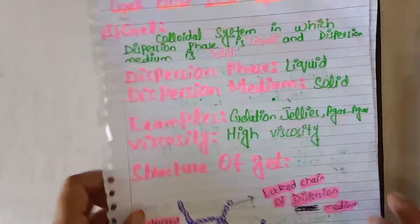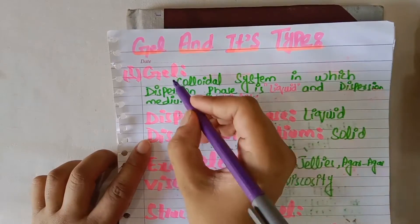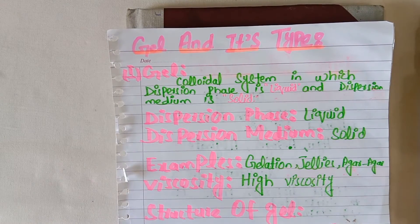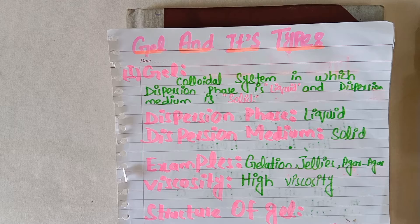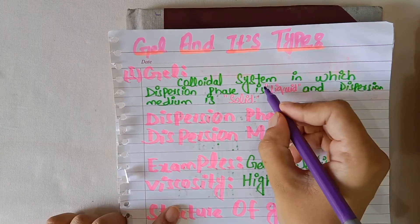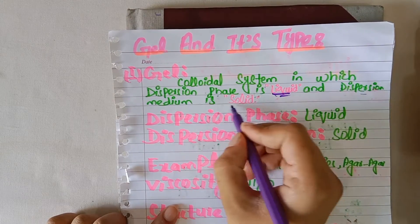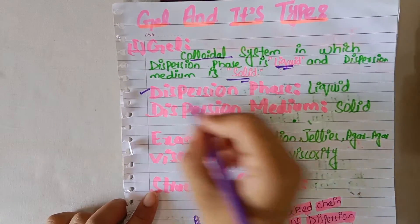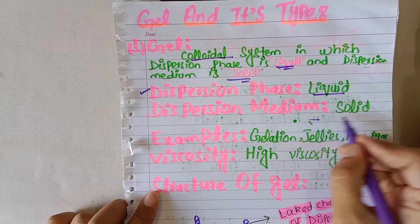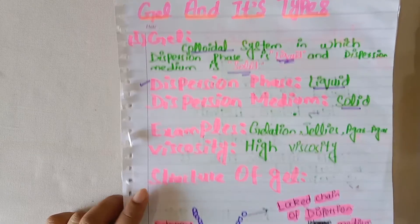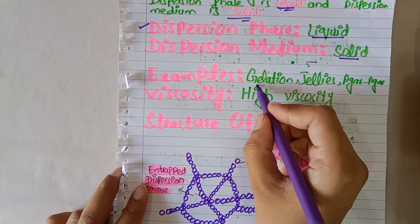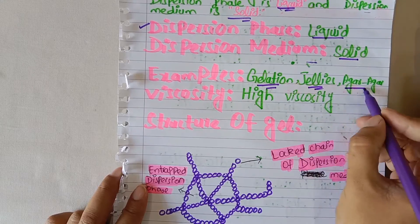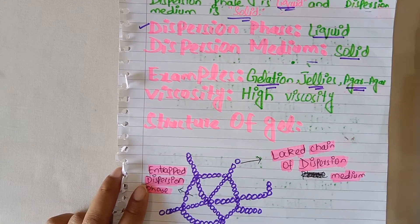Gels are colloidal systems in which the dispersion phase is liquid and the dispersion medium is solid. To define gels: gels are colloidal systems where the dispersion phase is liquid and the dispersion medium is solid. Examples include gelatin, jellies, and agar-agar.